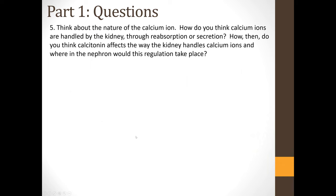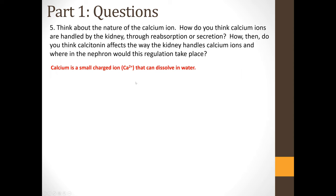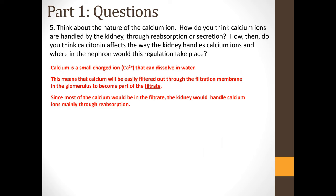Question 5: Think about the nature of the calcium ion — how do you think calcium ions are handled by the kidney, through reabsorption or secretion? Calcium is a small charged ion that can easily dissolve in water because it is hydrophilic. Because it's so small and dissolved in water, calcium will easily be filtered out through the filtration membrane in the glomerulus to become part of the filtrate — it is small enough to pass through the filtration pores.